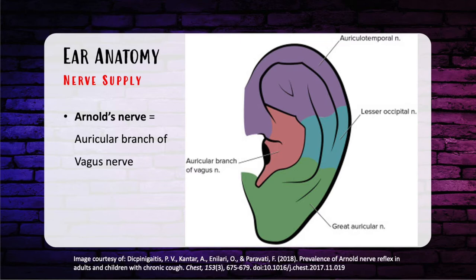If a patient gets a ring block around their ear — meaning local anesthetics placed circumferentially around the ear — this isn't going to anesthetize Arnold's nerve unless you go inside the conchal bowl to reach it.